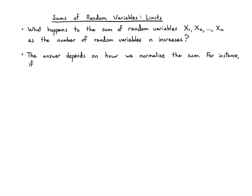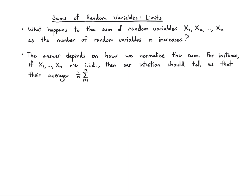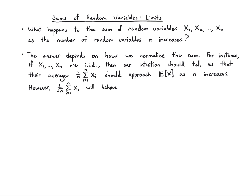If x1 through xn are IID and I take their average — which is just 1 over n times the sum — our intuition tells us that this average should look like the mean, and that's correct. As n gets larger, this should get closer and closer to the mean. We saw that the average of this average is the mean and its variance is 1 over n times the variance of x. So as n increases, the variance collapses. But it turns out that 1 over root n of this sum will behave more like a Gaussian random variable. We have to be careful about the normalization term in front. Let's try to make these two notions precise: if I take the average it looks like the mean, and if I take 1 over root n times the sum, that looks Gaussian.